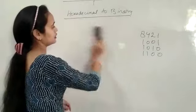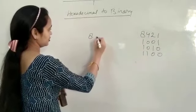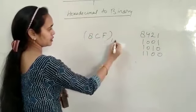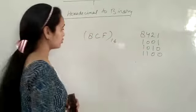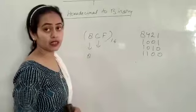One more example. Suppose I have 8CF, base is 16. 8 is 1000, C is 12 which is 1100, and F is 15 which is 1111.